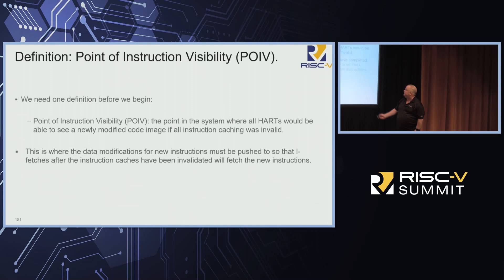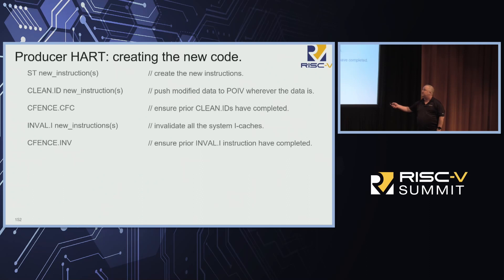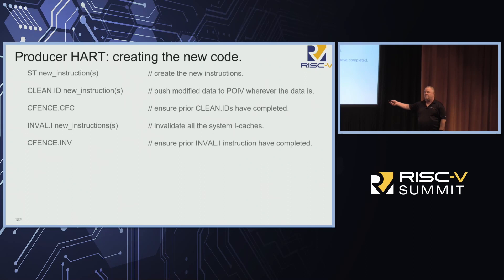The first thing you do is a store that creates your new instructions — of course that means only the data side can see it so far. After that you execute one of our new cache control instructions: clean.ID. Clean.ID takes that modification and pushes it down to the Point of Instruction Visibility. We have a new fence here — a completion fence — that insists all of these are done everywhere before any later instructions execute. After that we invalidate the I-caches with inval.I, then another fence to keep later stuff from happening too soon.